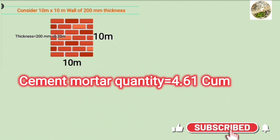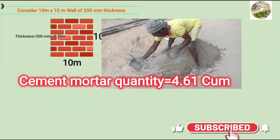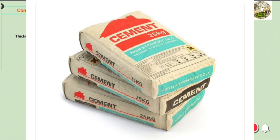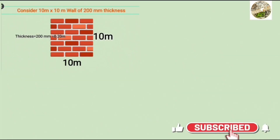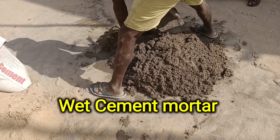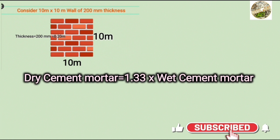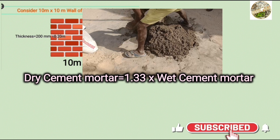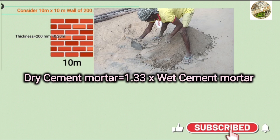Now we need to get the cement mortar for 4.61 cubic meters of cement and sand. We multiply by the dry mortar factor of 1.33, giving us 1.33 cubic meters.